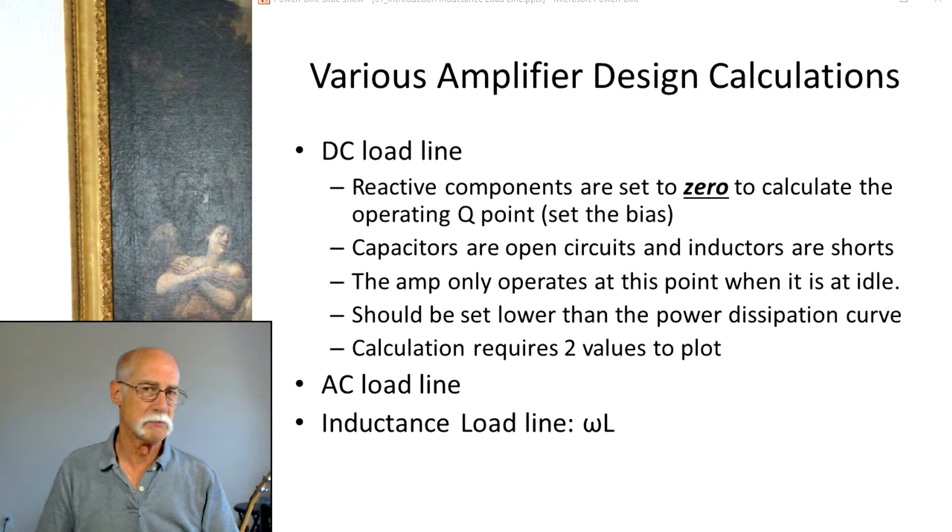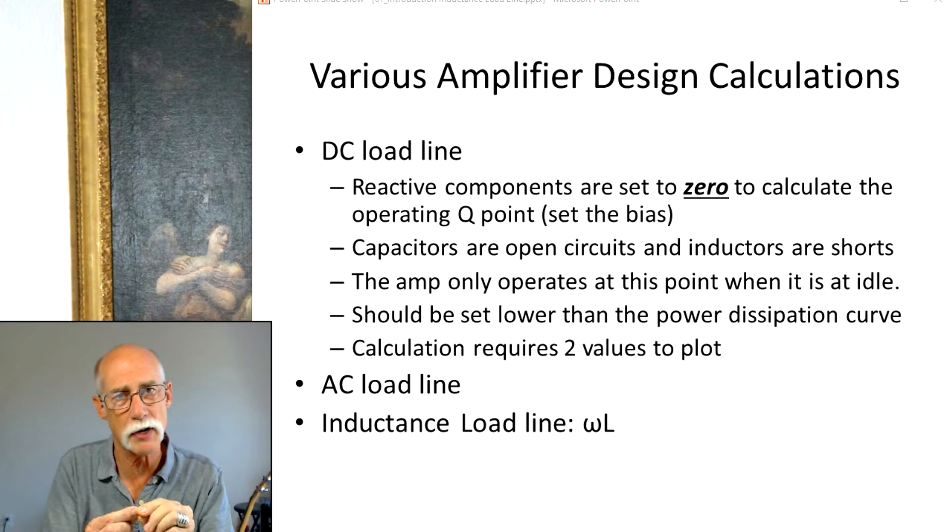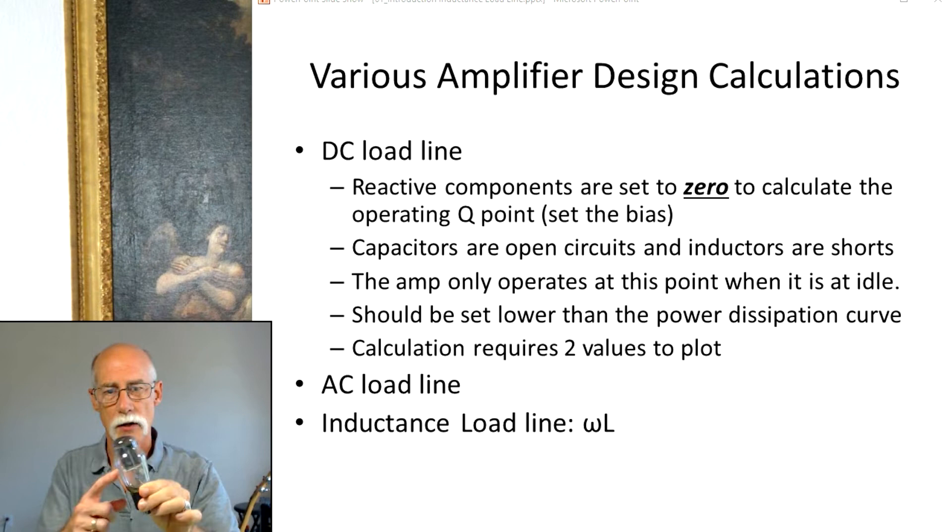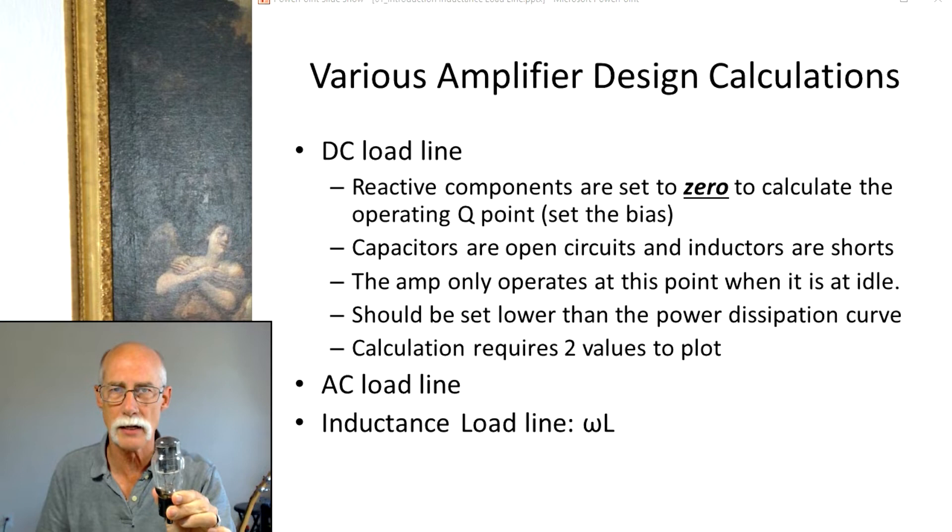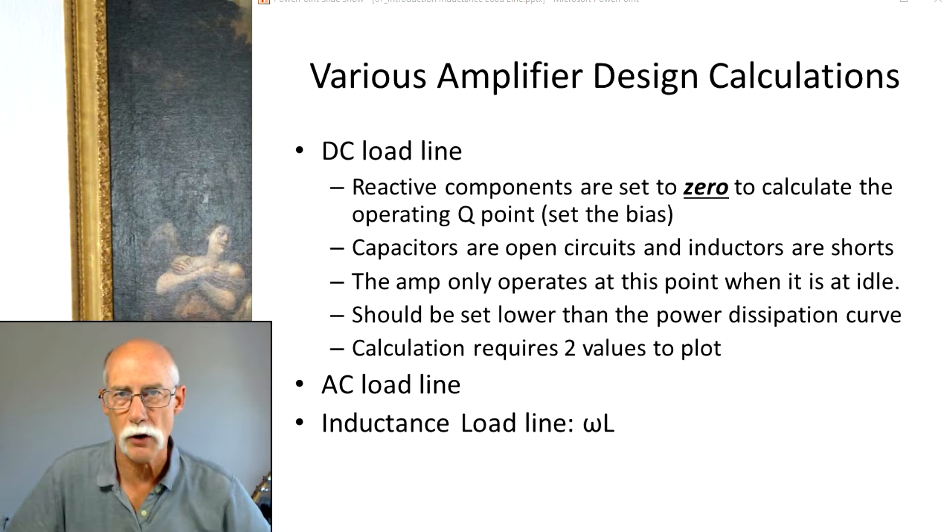The DC load line. When we're designing tube amps or transistor power finals, we calculate the DC load line. There are two numbers that we need to actually plot the line: current and voltage. And we do that, and we get the DC load line in order to determine where the bias point is. We don't want it to be above the plate dissipation window for the tube because the tube will only dissipate so much power. If it gets too hot, it shortens the life and does other strange stuff which is not always good.